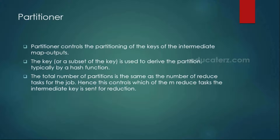Till now we have seen the mappers, reducers, and combiners as well. So what is this partitioner and when are we going to use it? The partitioner is used when, based on your mapper output results, you want to send specific data to specific reducers. For example, we want to send words starting with letter A to I to reducer 1, words from J to N to reducer 2, and words starting with O to Z to reducer 3.